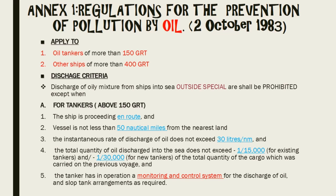Outside the special area, for tankers above 150 GRT: discharge of oil mixture from ship into the sea is prohibited except when the following conditions are met — the ship should proceed en route; the vessel is not less than 50 nautical miles from the nearest land; the instantaneous rate of discharge of oil does not exceed 30 litres per nautical mile; the total quantity of oil discharged does not exceed 1/15,000 for existing tankers and 1/30,000 for new tankers of the total cargo quantity carried on the previous voyage; and the tanker has in operation a monitoring and control system for discharge of oil and slop tank arrangement.